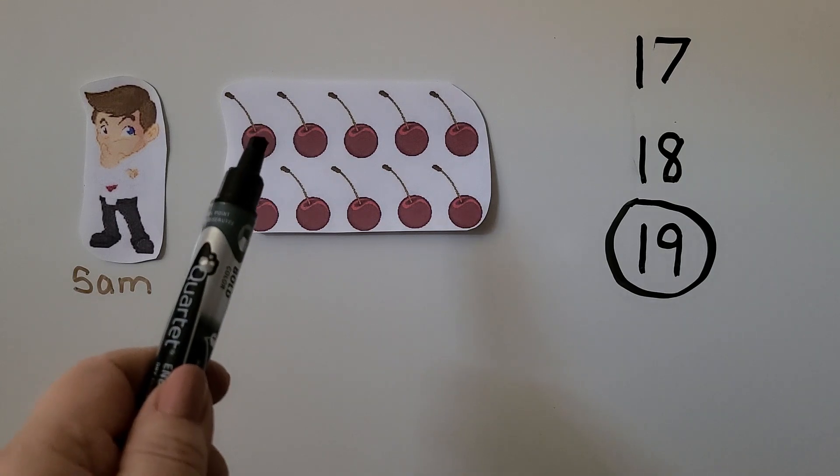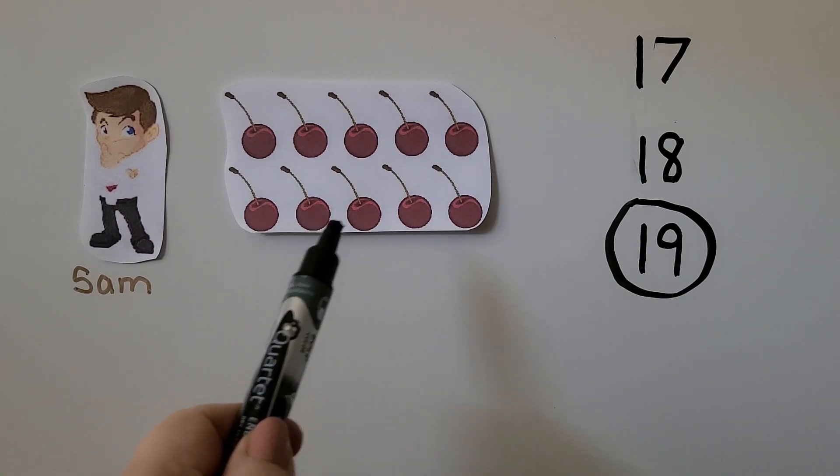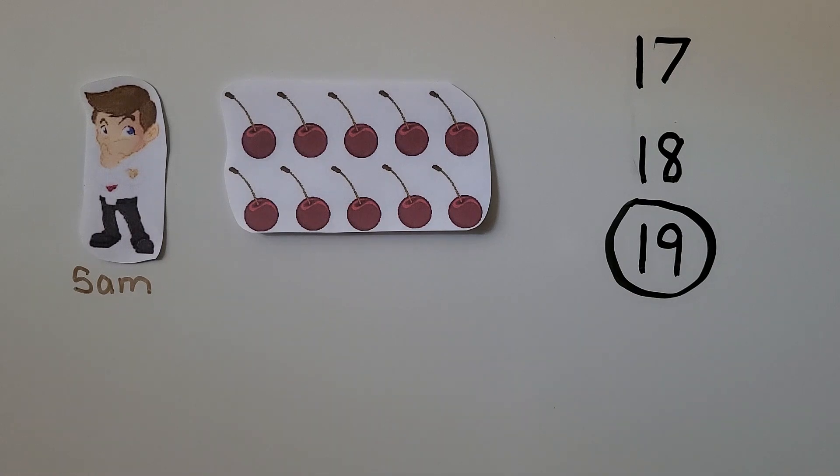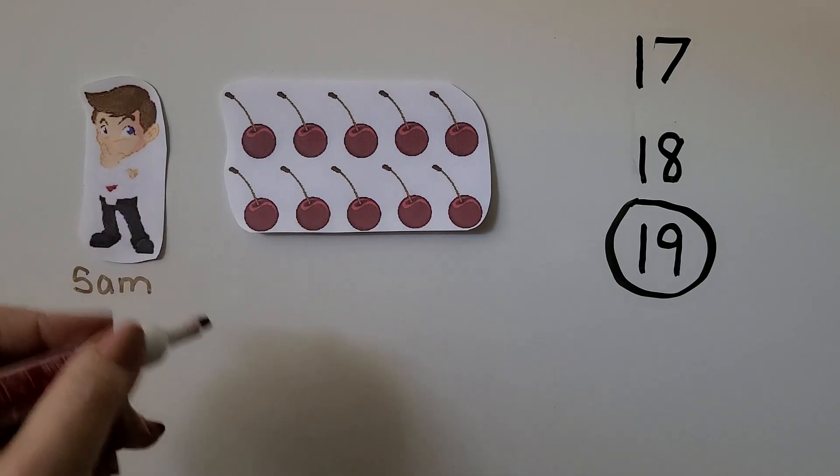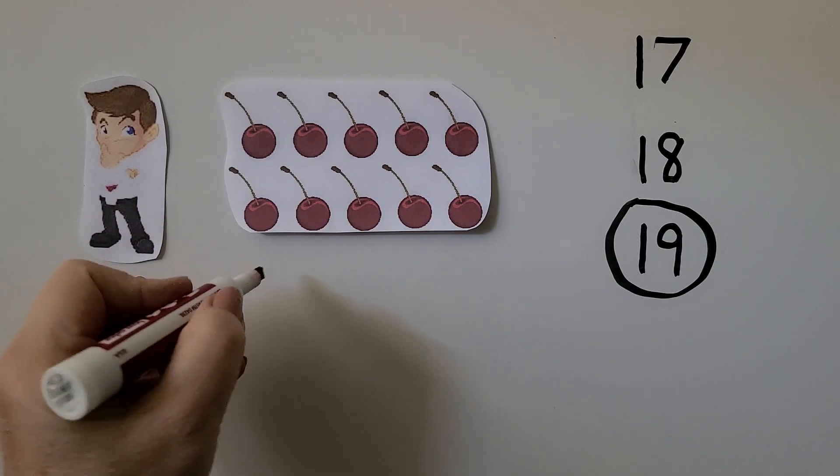I see 1, 2, 3, 4, 5, 6, 7, 8, 9, 10. There's 10 cherries there. We need to show 19. So we have 10. We need 9 more cherries.